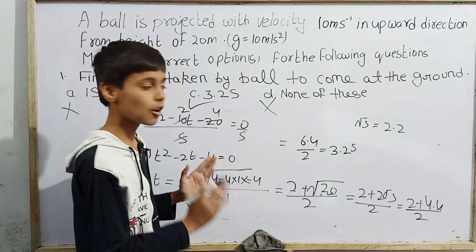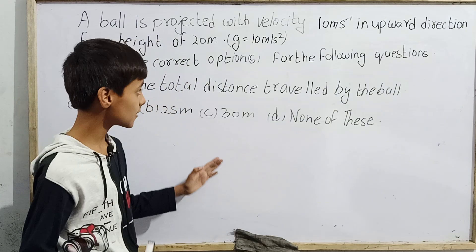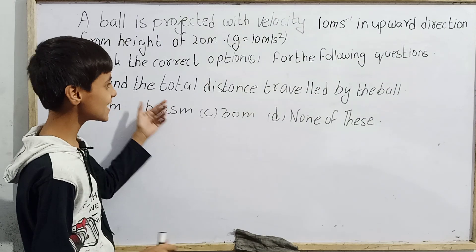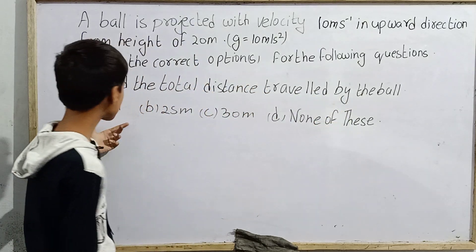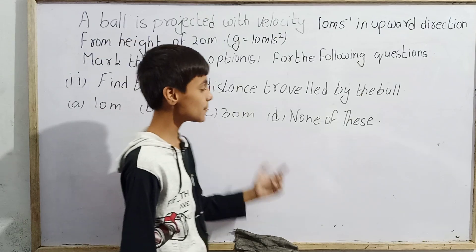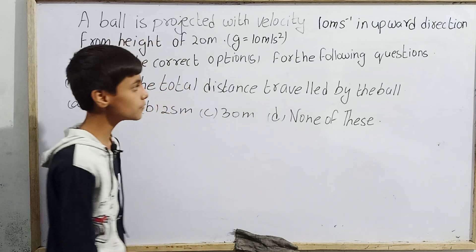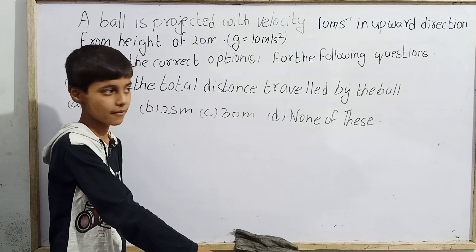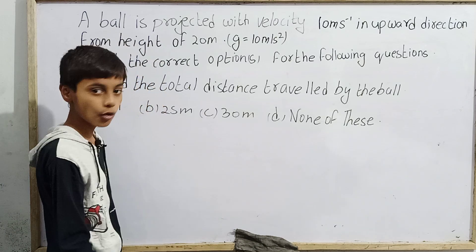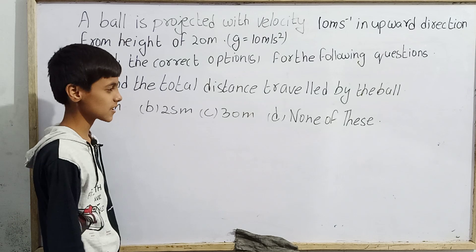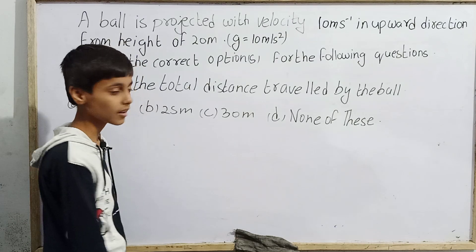Now for question number 2: find the total distance travelled by the ball. The options are: 10 meters, 25 meters, 30 meters, and none of these. Note that displacement will be minus 20 meters, but distance is always positive — we have to find that positive value: whether it is 10, 25, or 30 meters.